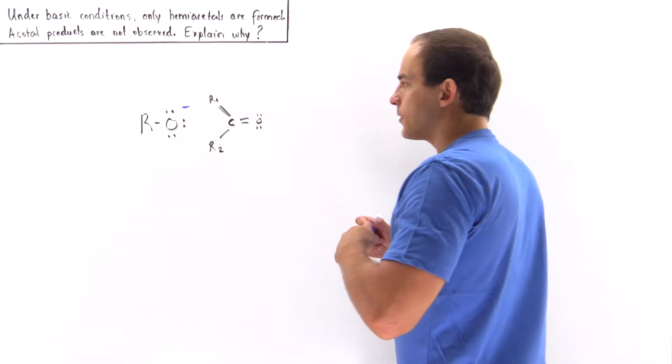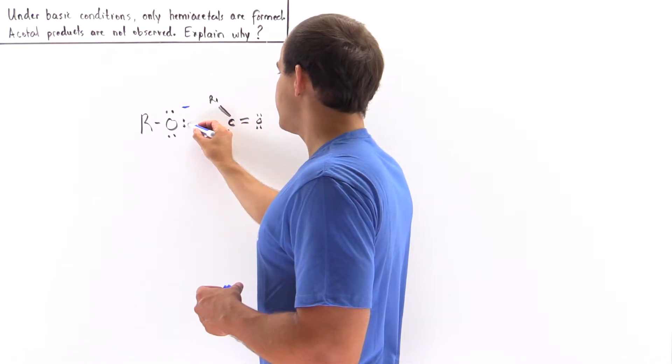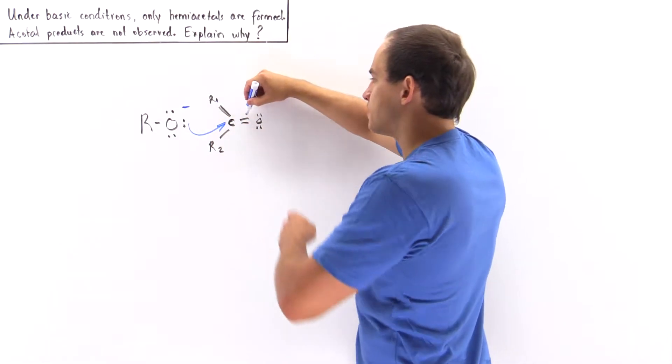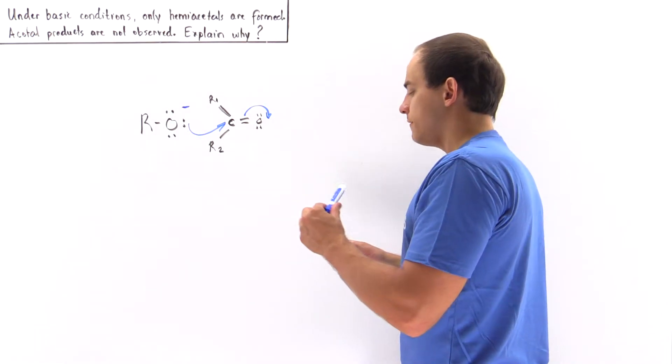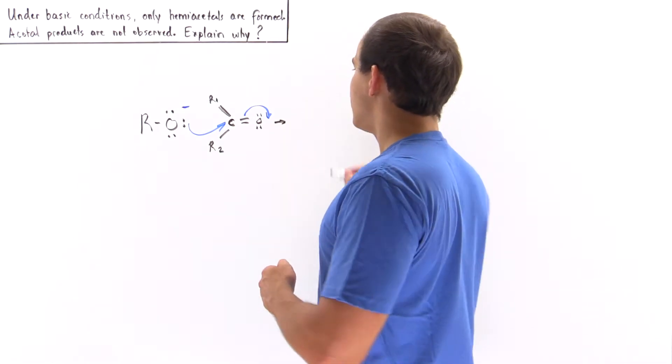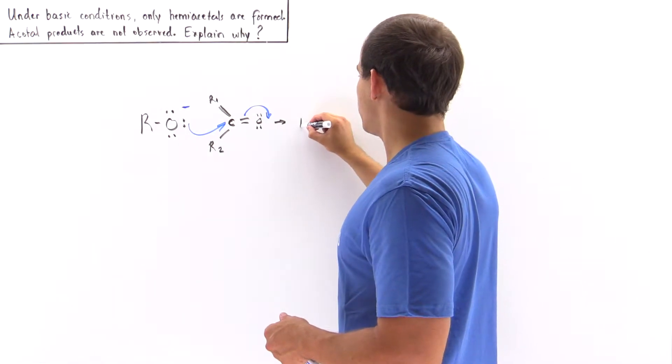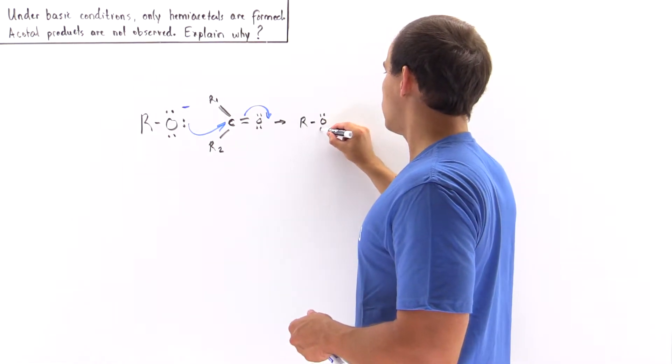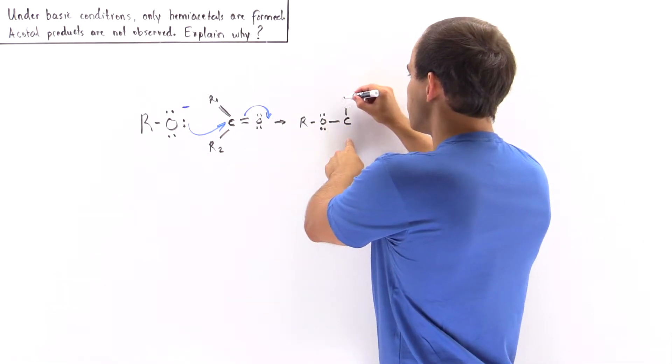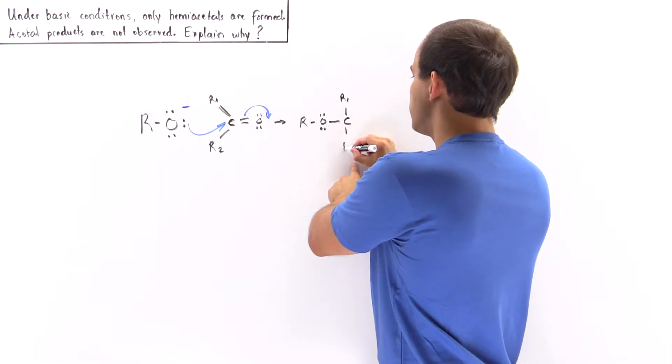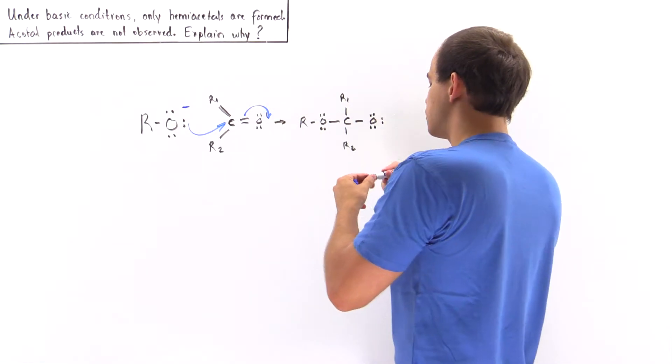So basically in the first step we have the nucleophilic addition. So these two electrons attack this carbon, displacing this pi bond and placing the pi bond onto this oxygen here. So we form our intermediate on which we have the negative charge placed onto that oxygen.